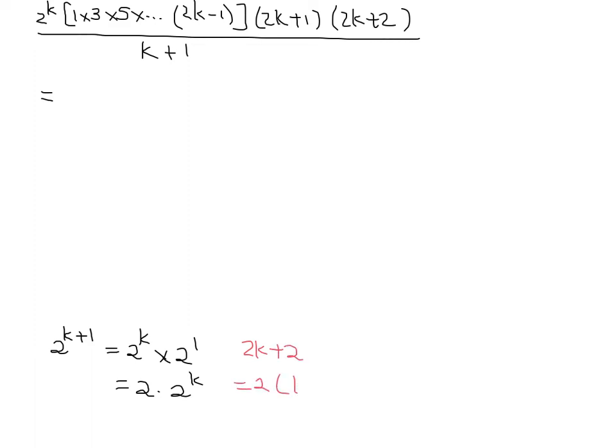That's 2 outside of a k plus 1. So I'm getting my 2 and my k plus 1. So k plus 1 there, 2k plus 2 there, and I've got a 2 outside.